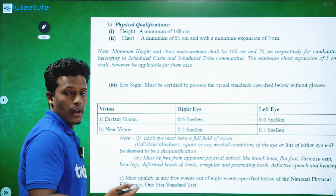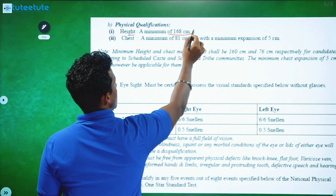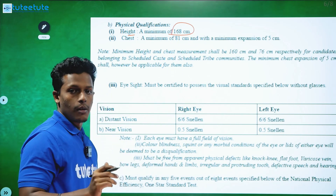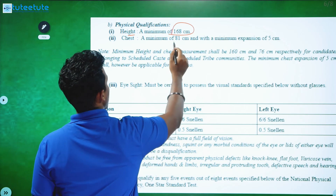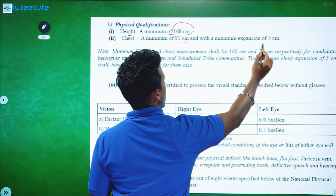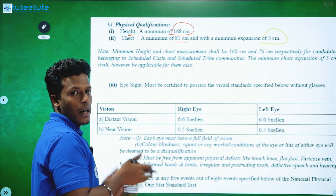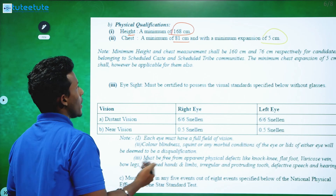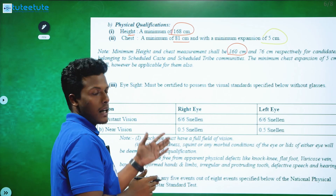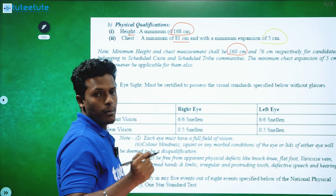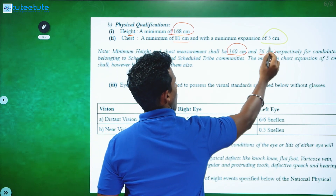For a uniform post, the required height is 168 cm. The measurement of the chest is 80 cm with a minimum expansion of 5 cm. The physical standard height is 168 cm, and the chest is 70 cm for the other category.